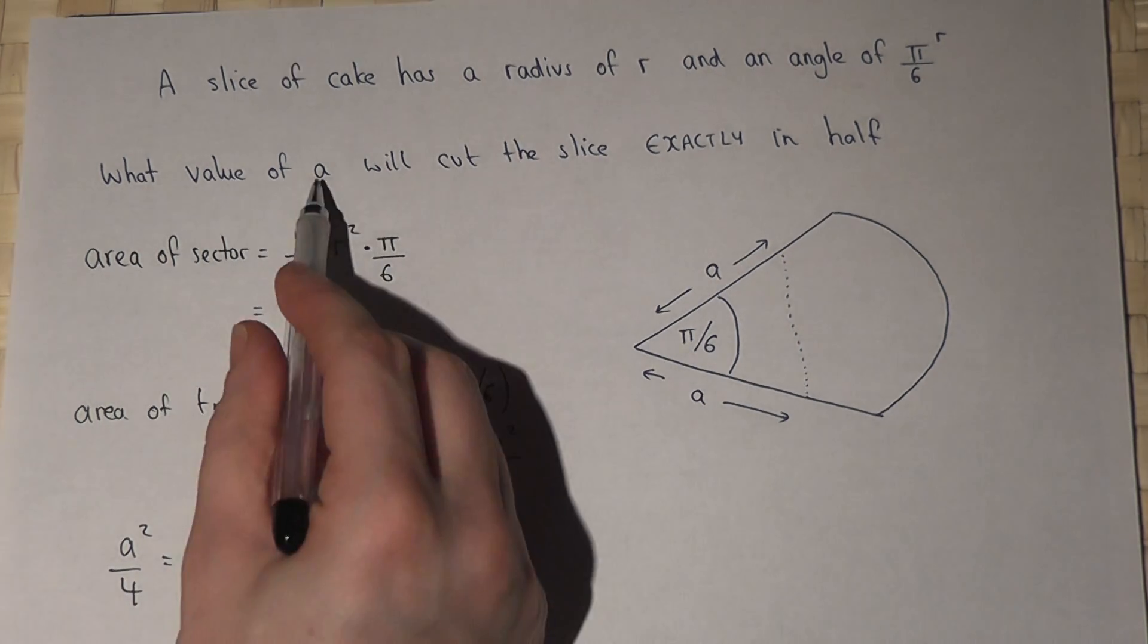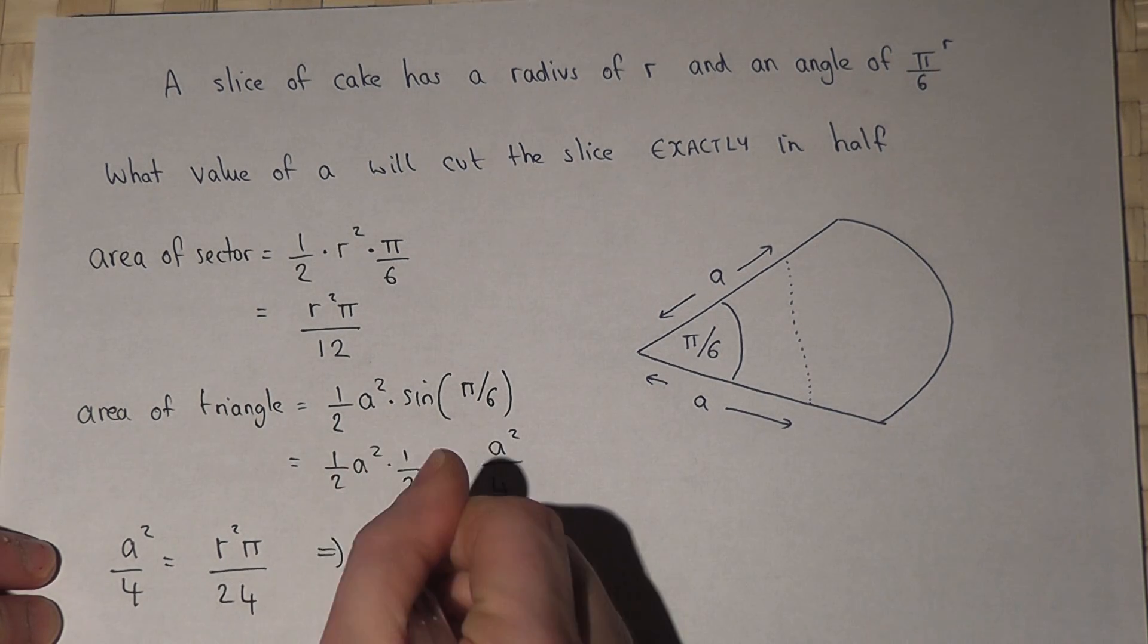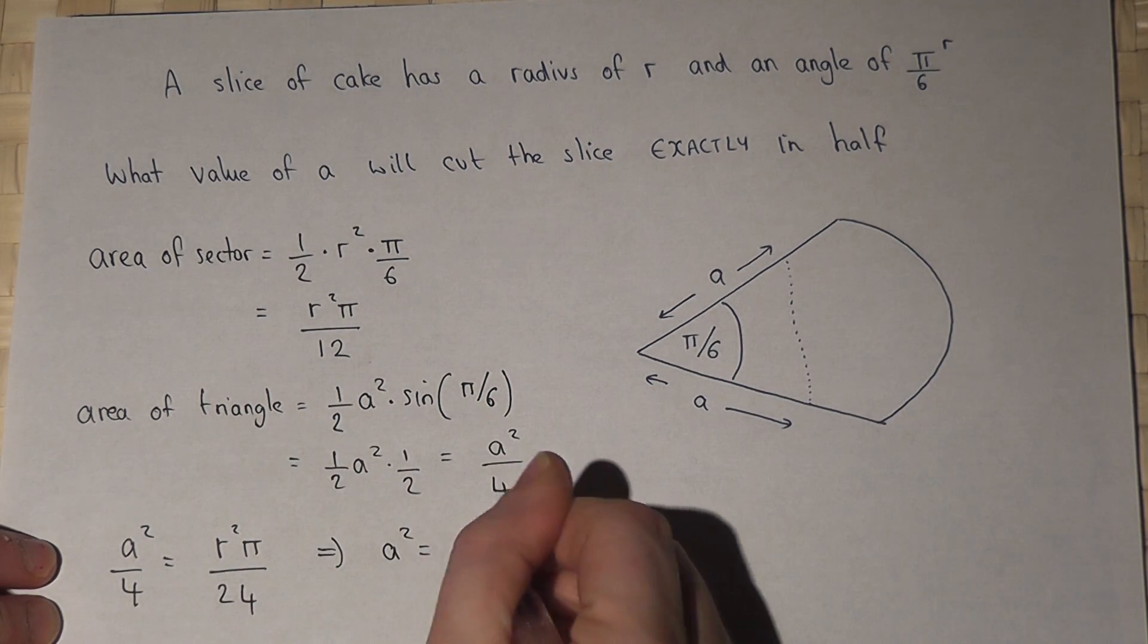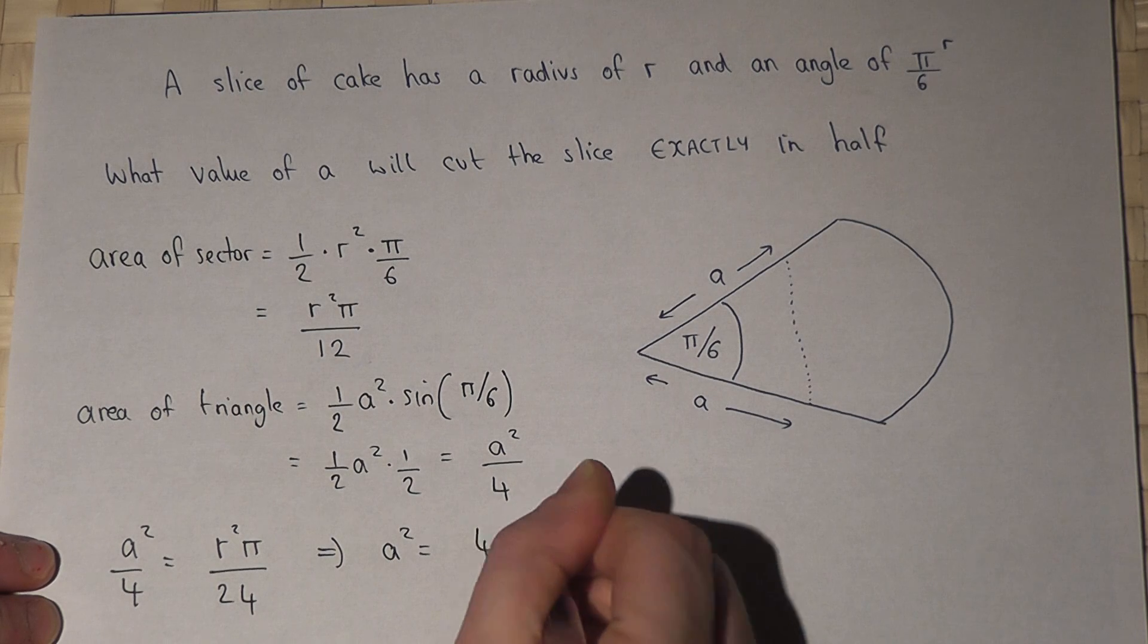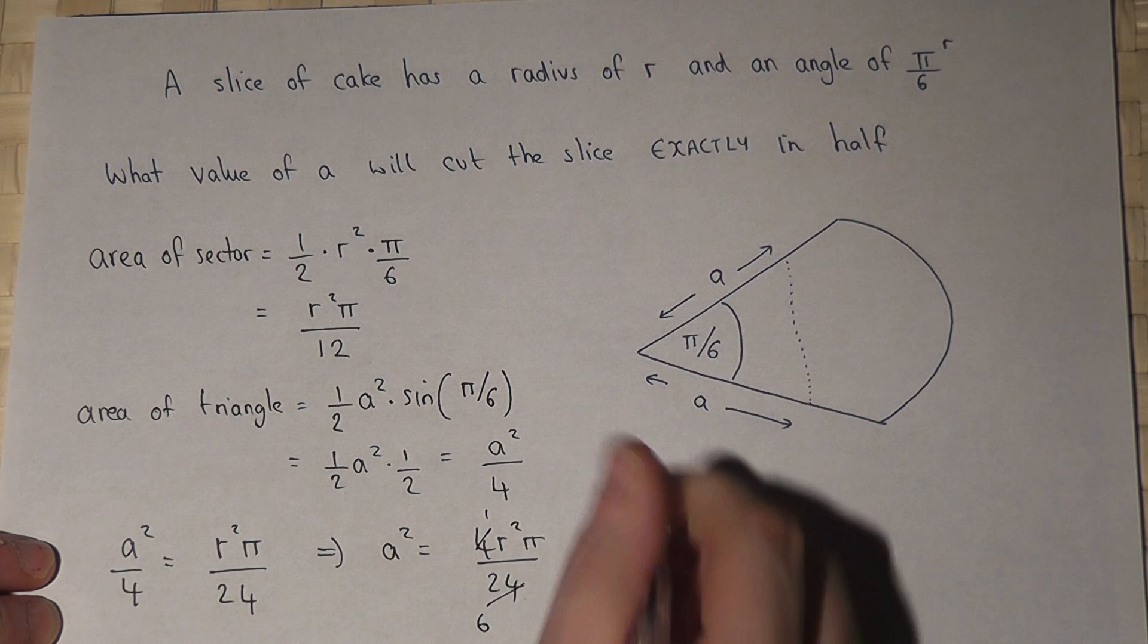So to find the value of A for this cake we times by 4 so 4R squared pi over 24 which cancels down to 1 over 6. So R squared pi over 6.